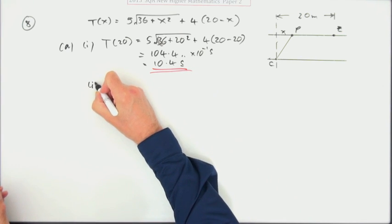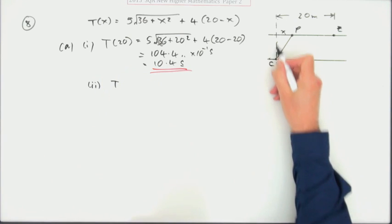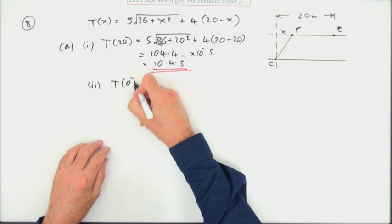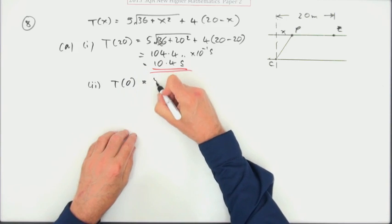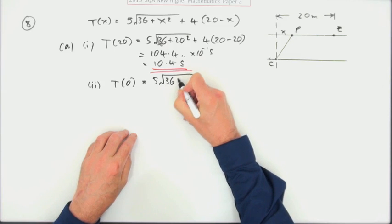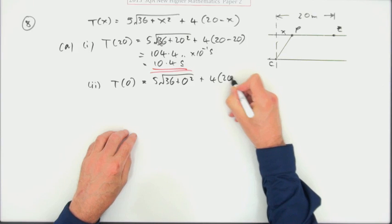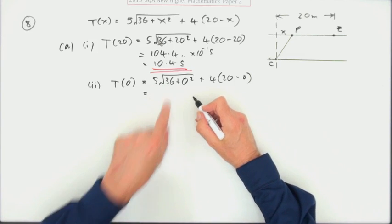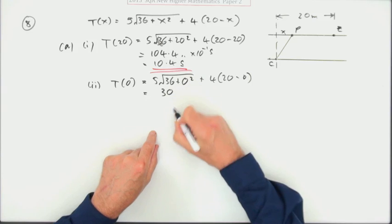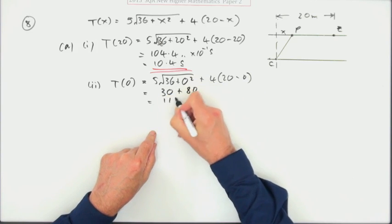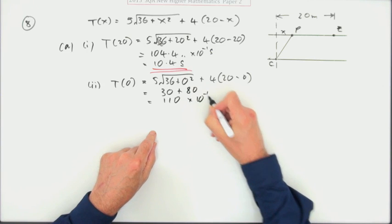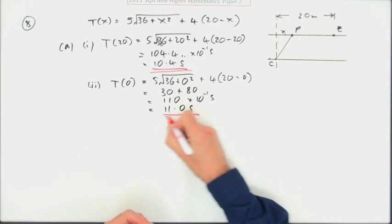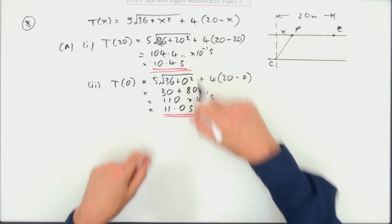What if it swims the shortest distance? So it's going to go all 20 meters, so x is 0. That'll be 5 times root 36, which is 6, 5 times 6 is 30 plus 80 is 110. That's tenths of a second, so it's 11.0 seconds. Not a lot in it.